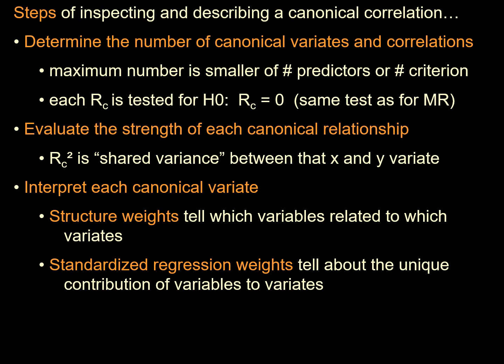The steps of inspecting and describing a canonical correlation are: first, determine the number of canonical variates and correlations — the maximum number is the smaller of predictors or criterion variables, tested starting from zero. Second, evaluate the strength of each canonical relationship — this is the shared variance between x and y variates. Third, interpret each canonical variate structure weight to identify which variable relates to which variate, and standardized regression weights tell us the unique contribution of variables.